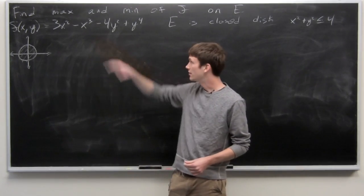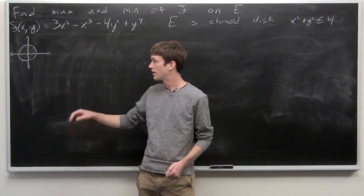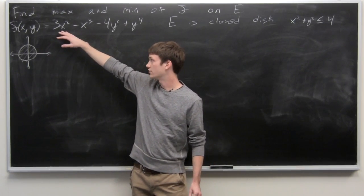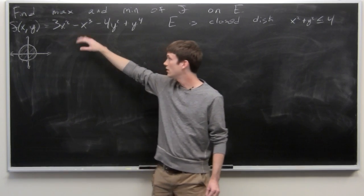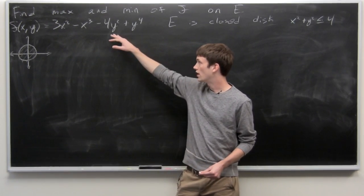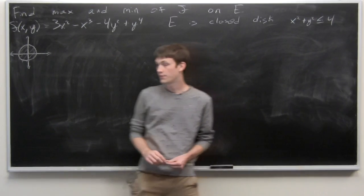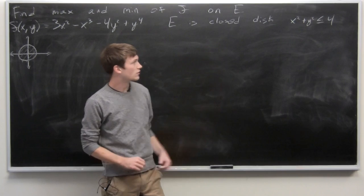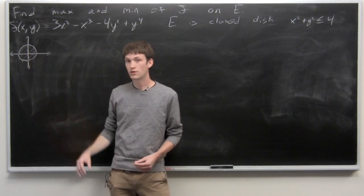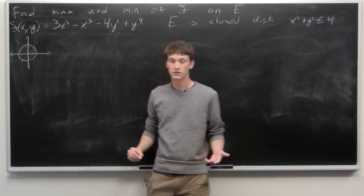In this problem, we're asked to find the max and min of f on our compact region E, where f(x,y) is given as 3x² − x³ − 4y² + y⁴. And E is given as the closed disk of radius 2, centered at the origin. We have a little sketch there.